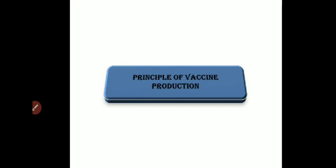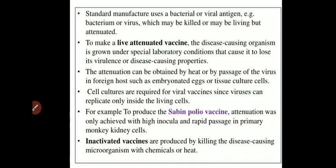Let us study the principle of vaccine production. A standard manufacturer uses bacteria or viruses which may be killed or in live but attenuated form for the production of vaccines. An individual may be exposed to an antigen to induce the formation of antibodies, so that the body will produce antibodies against those antigens, developing a type of immunity.